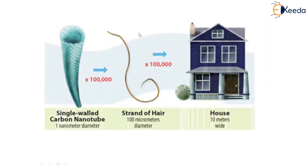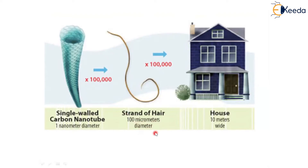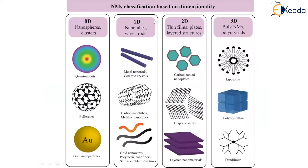Here is a size comparison example using a single-walled carbon nanotube. If you multiply the carbon nanotube one lakh (100,000) times, it becomes the size of a human hair. A strand of hair has a diameter of 100 micrometers. If that hair is then multiplied one lakh times, it becomes a house 10 meters wide — showing just how small a single-walled carbon nanotube is.